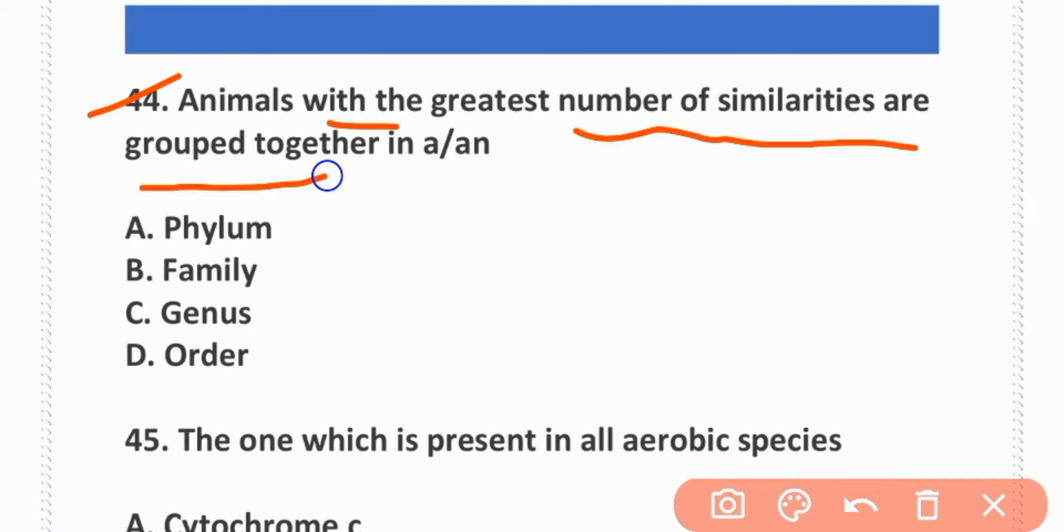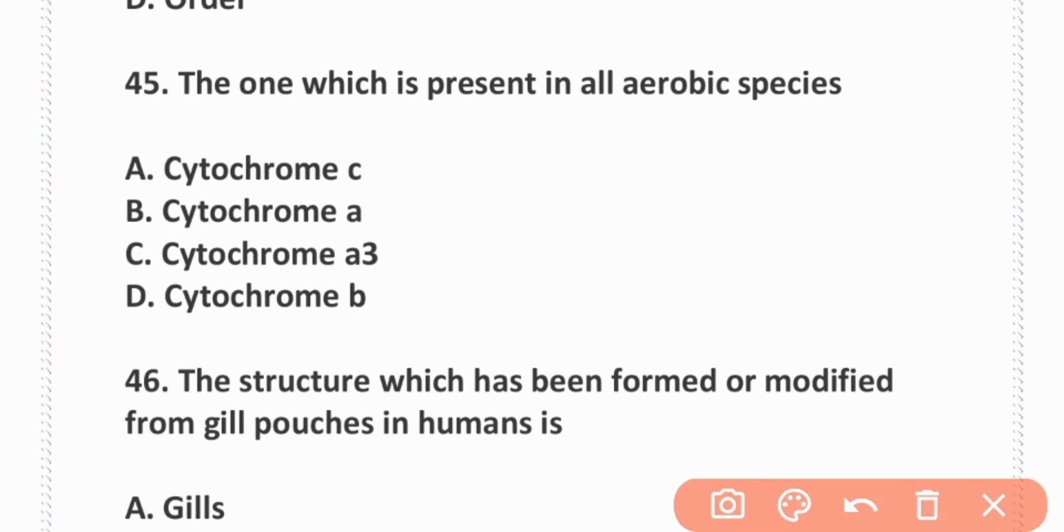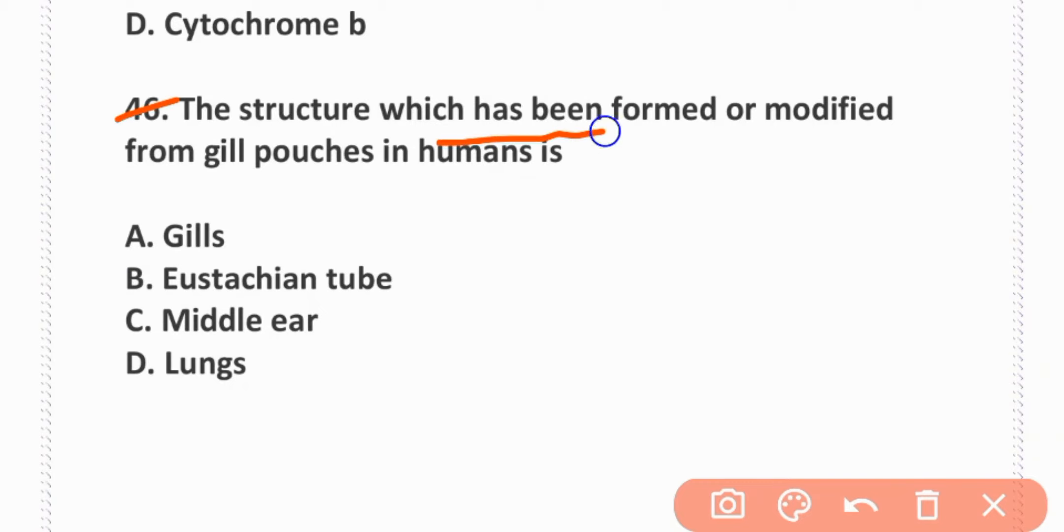Which of the following relationships is not an example of symbiosis? Marchantia sporophyte and gametophyte. Animals with the greatest number of similarities are grouped together in a genus.